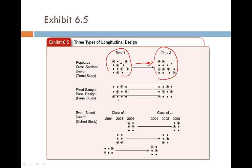Secondly, if we conduct a panel study, we collect a group of people starting around the year 2000 and follow these same people over a period of time to see how their values, ideals, and attitudes change. Remember, we do not change anybody — it is a fixed sample. That is called a panel study, another type of longitudinal study.